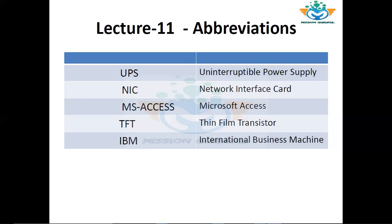First of all: UPS — Uninterruptible Power Supply. NIC — Network Interface Card, or National Information Center. MS Access — Microsoft Access. TFT — Thin Film Transistor. IBM — International Business Machine. So we will see what is in today's lecture.